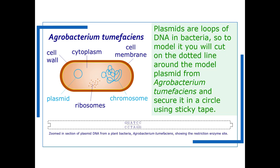Because plasmids are loops of DNA which are also found in bacteria, to model it again you need to cut around the dotted line and secure the template in a circle using sticky tape.